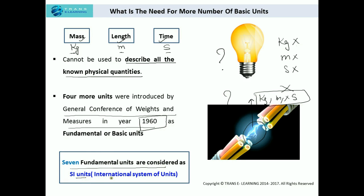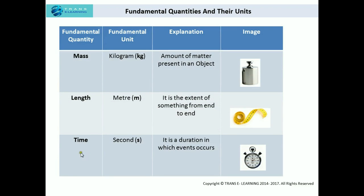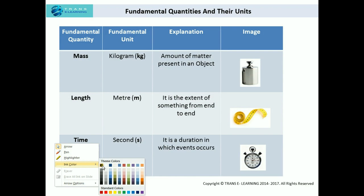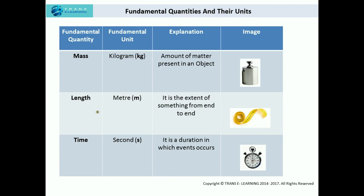We have understood the need for more number of basic units. Now let's study all seven units in detail — fundamental quantities and their units. First I will discuss the three fundamental quantities and their units, and then the four more fundamental quantities and units introduced in 1960. Apart from that, there were two complementary units that were introduced. So first, the basic three fundamental quantities which existed initially.